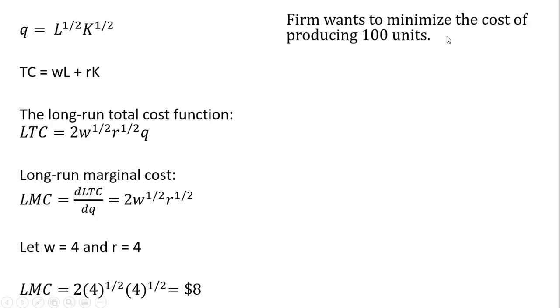Firms want to minimize the cost of producing 100 units of output, so we're going to set up a Lagrangian here. We're going to minimize the total cost, 4L plus 4K, where the 4s represent the price of inputs, and subject to the constraint that we're going to produce 100 units of output.